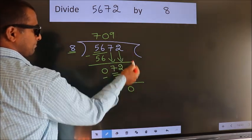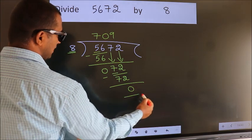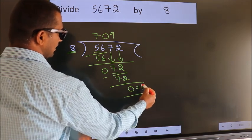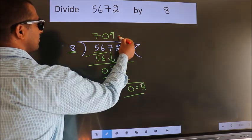No more numbers to bring down. So we stop here. This is our remainder. This is our quotient.